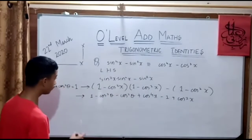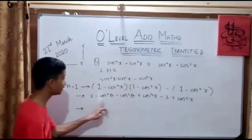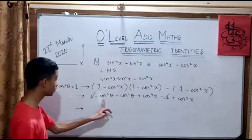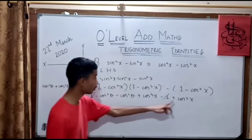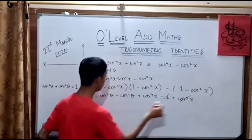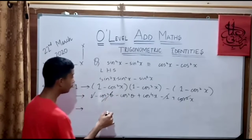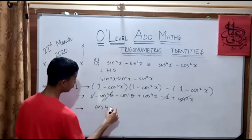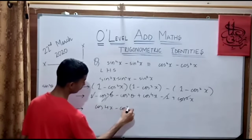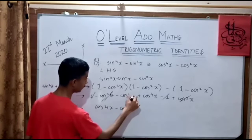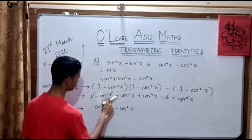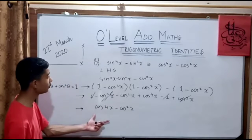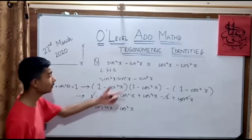Now we solve: plus 1 and minus 1 cancel. Minus cos squared x and plus cos squared x also cancel. The remaining part is cos to the power 4x minus cos squared x. We have just shown that the left hand side is equal to the right hand side.